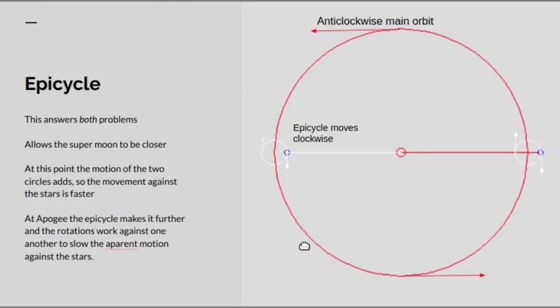Now, in the supermoon position, the little cycle brings the Earth and the Moon closer together, so it looks larger. In the opposite phase, the little cycle takes the Moon further away from the Earth, so it looks smaller. Now, because the motion of the two is in the opposite direction, when the Moon is coming down here, the motion of the epicycle adds to the angular velocity of the Moon and makes it appear to move faster against the fixed stars.